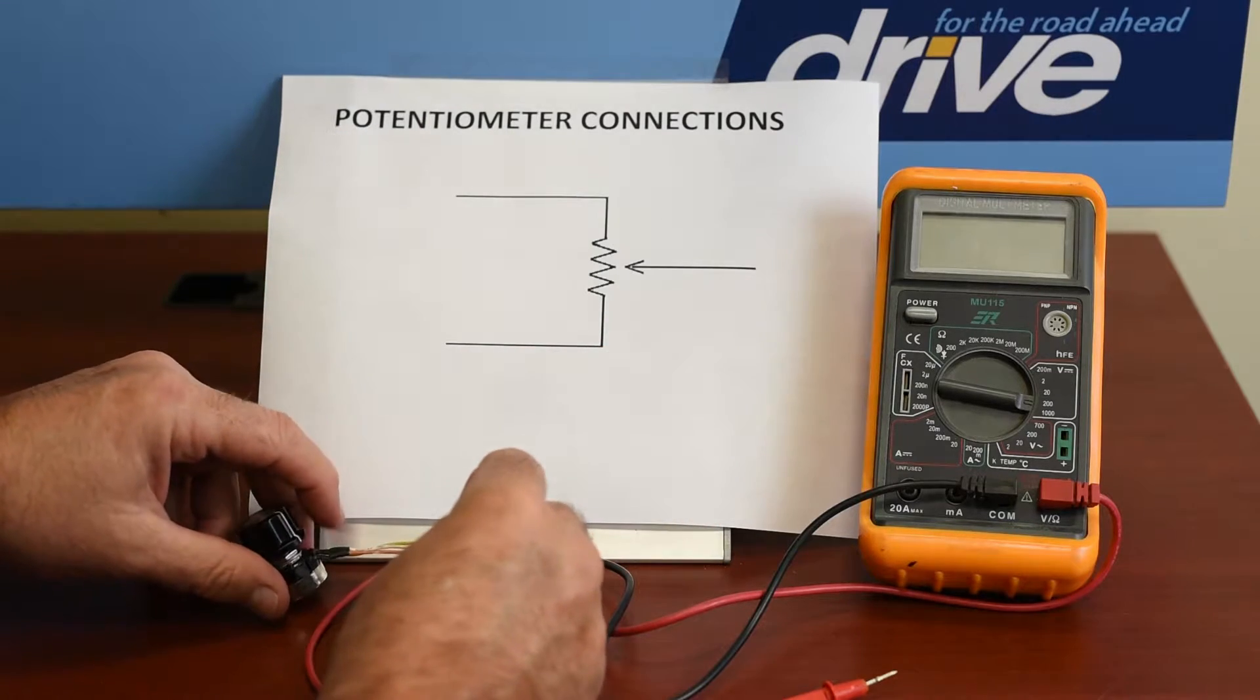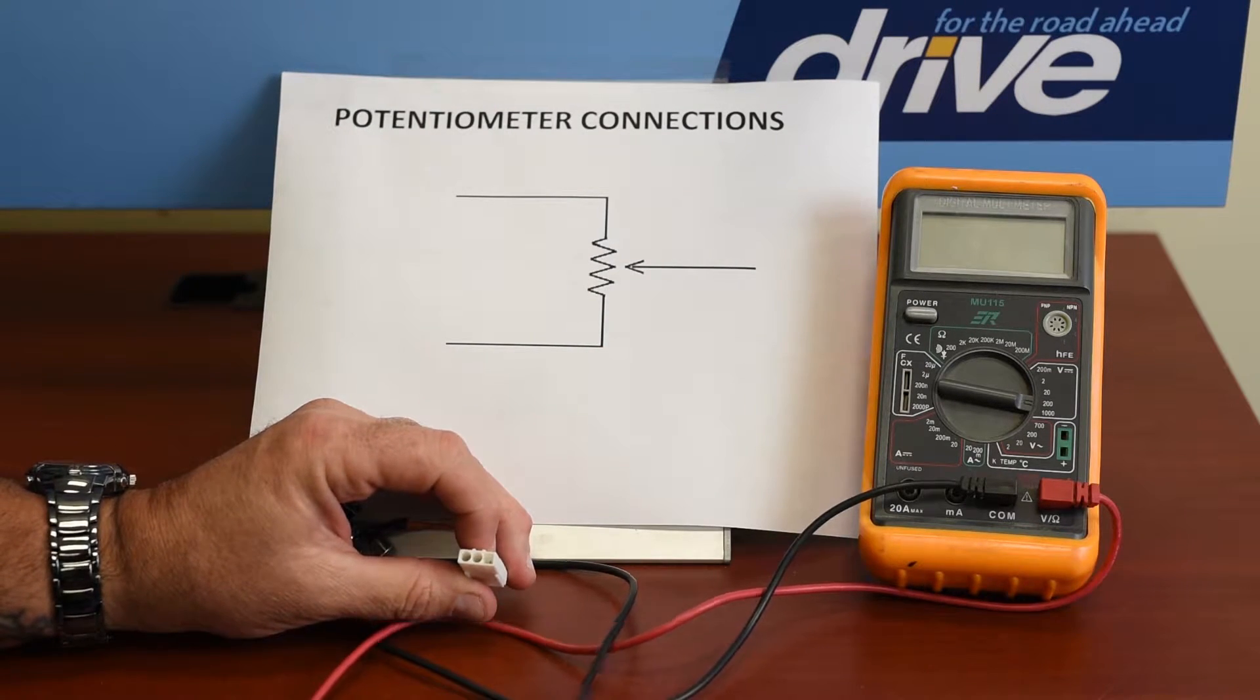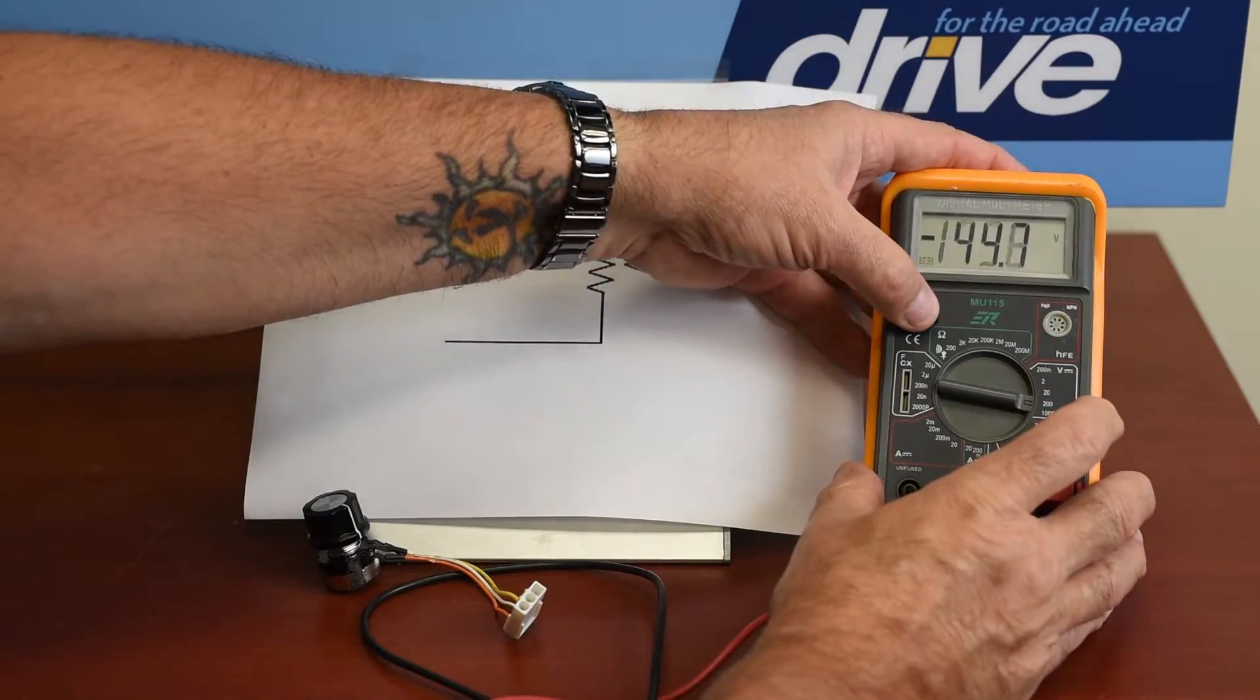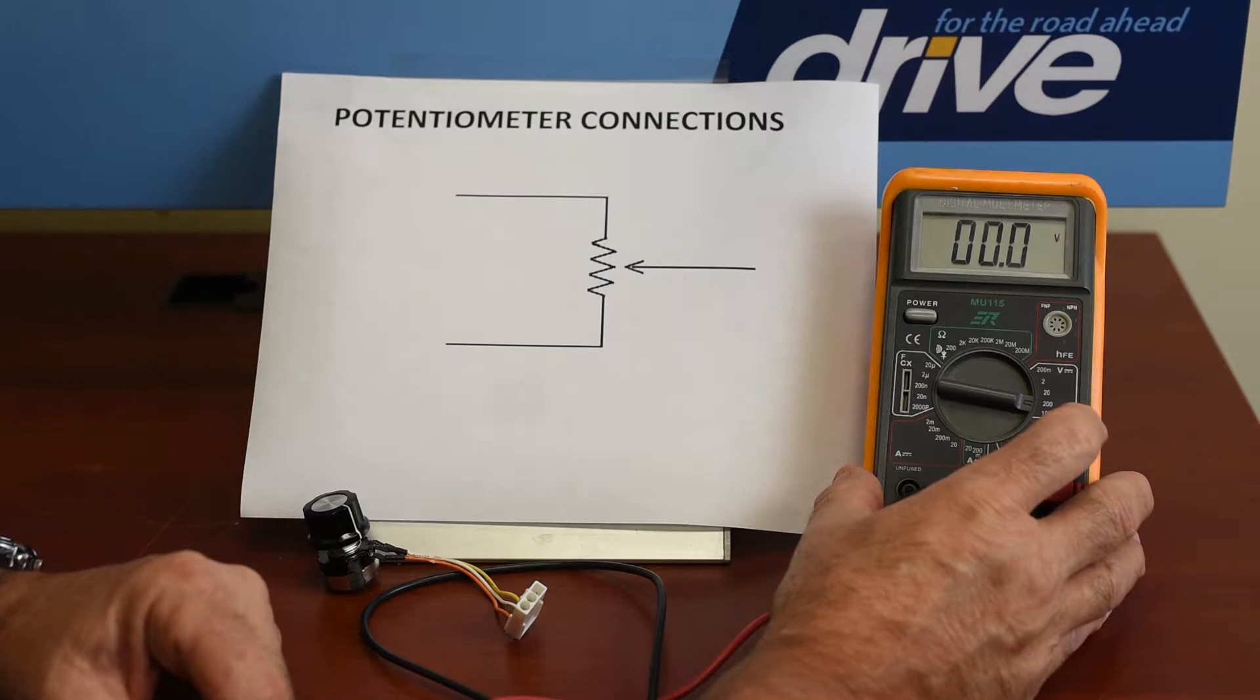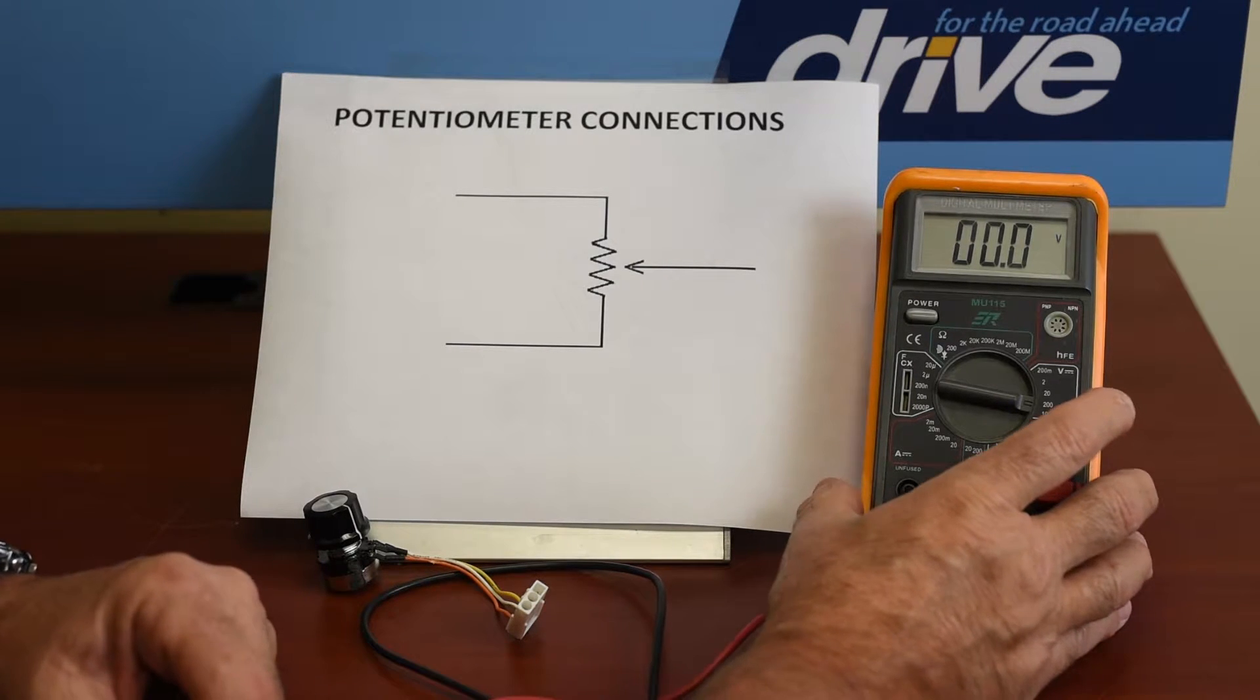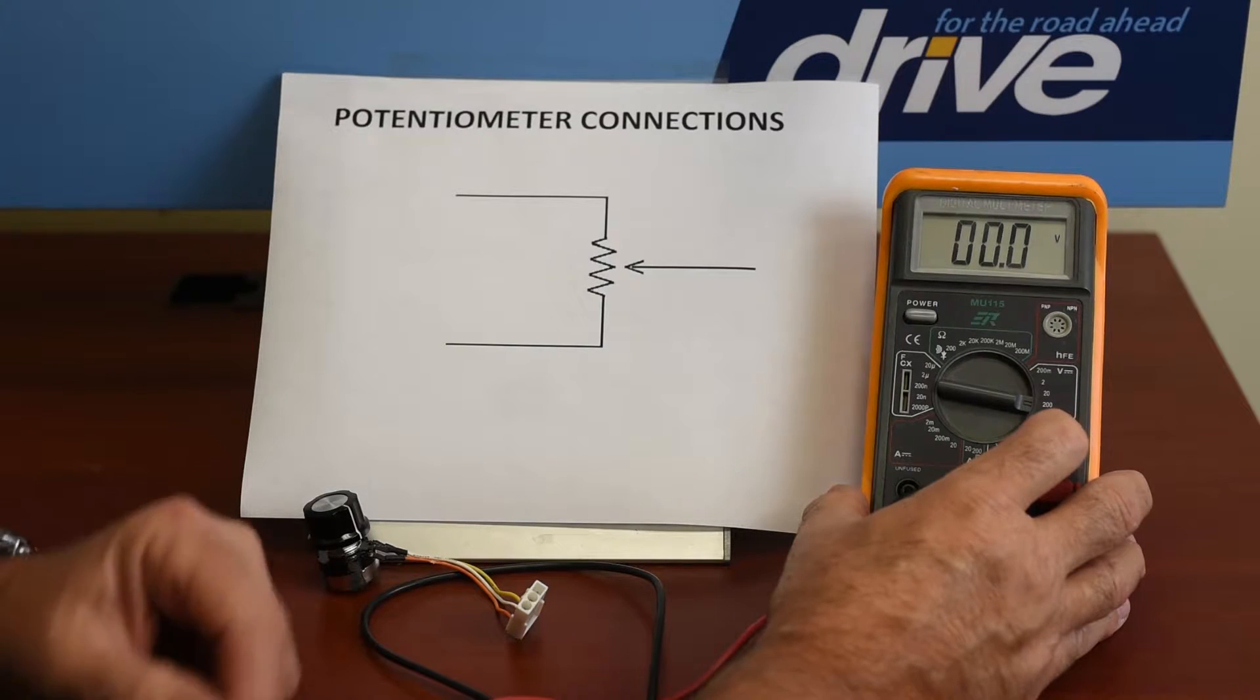We test it by measuring first the outside to outside. We can turn our meter on now, and we're going to go to the 200k scale because we believe this is going to be an approximately 100k pot. That's 100,000 ohms.